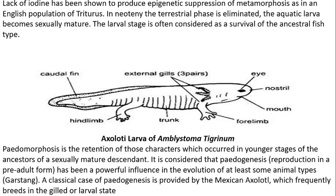In this video we have discussed Neoteny and Pedogenesis. Both terms were coined by Colwan. Neoteny refers to the retention of a larval or embryonic trait in the adult body, such as larval gills in some adult salamanders. Pedogenesis refers to the development of gonads by a larva or pre-adult animal, leading to reproduction in an otherwise immature stage. This covers the phenomena of Neoteny and Pedogenesis in amphibians.